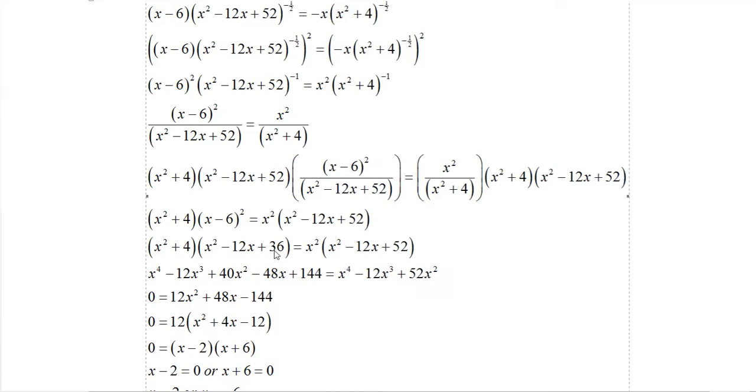When you take x minus six squared, you get x squared minus 12x plus 36. Then we distribute here, basically using FOIL. Distributive property here gives you all these terms. For example, on the right, x squared times x squared is x to the fourth. x squared times negative 12x is negative 12x cubed. x squared times 52 is 52x squared. On the left, x squared times x squared is x to the fourth. For the cube term, x squared times negative 12x is negative 12x cubed. For the x squared term, 36 times x squared plus 4 times x squared is 40x squared. For the x term, 4 times negative 12x is negative 48x, and the constant term is 4 times 36, which is 144.